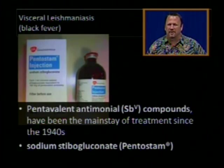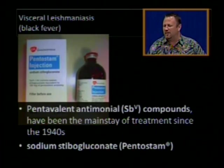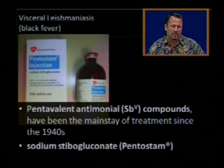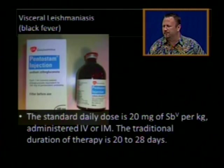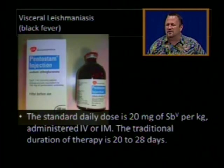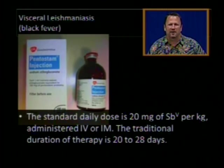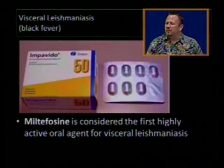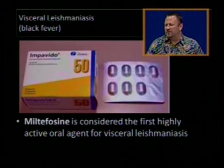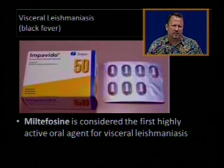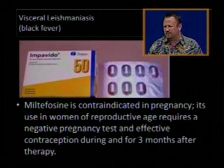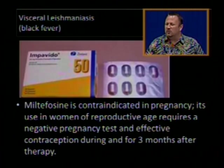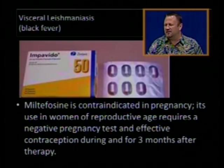Pentavalent antimonial compounds have been the mainstay of treatment since the 1940s — sodium stibogluconate (Pentostam) is available from the CDC for the treatment of visceral leishmaniasis. The standard dose is 20 milligrams of the SbV compound per kilogram of patient weight, administered IV or IM for 20 to 28 days. Miltefosine is considered the first highly active oral agent for visceral leishmaniasis, though it is very difficult to obtain. It is contraindicated in pregnancy and requires a negative pregnancy test and effective contraception during treatment and for three months after therapy.